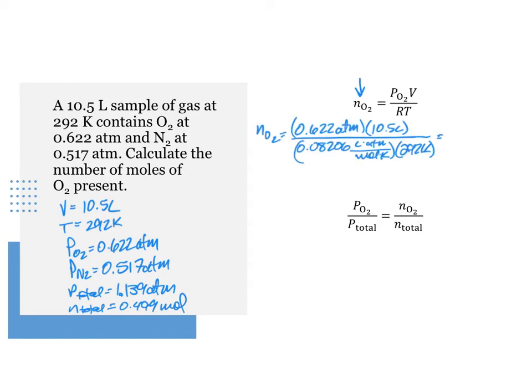Dropping in the values for the partial pressure of O2, the volume, and the temperature to get the moles of O2 equal 0.622 atm times 10.5 liters divided by 0.08206 liter atm per mole kelvin times 292 kelvin equals 0.273 mole.